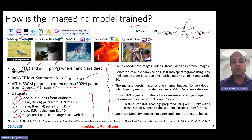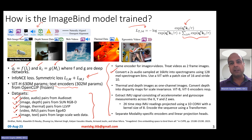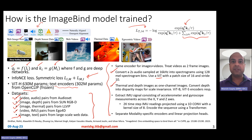Across modalities, they more or less use ViT-style models for encoding. They use the same encoder for images and videos, treating videos as two-frame images by extracting two frames. For audios, they convert a two-second audio sample at 16 kHz into spectrograms — which are essentially images — and use ViT on top of those spectrogram images. Thermal and depth images are modeled as one-channel images; depth images are converted to disparity maps for scale invariance, using ViT-B for thermal and ViT-S for depth.